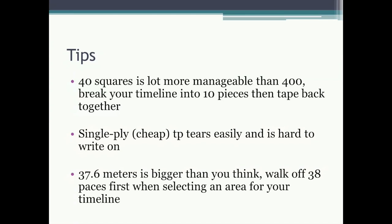Here are some tips for completing your timeline. Because 40 squares of toilet paper is a lot more easy to manage than 400, if you break your timeline into 10 equal segments and then tape it back together, you can manage it more easily. Single ply toilet paper tore very easily and was hard to write on, so it might be worth investing in a little bit higher quality toilet paper. Finally, 37.6 meters is bigger than you think — it's best to walk off 38 paces first when selecting an area to build your timeline.